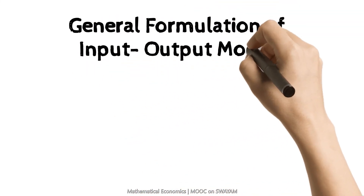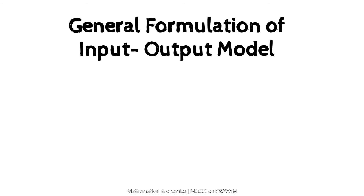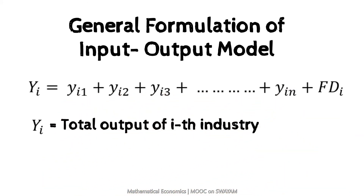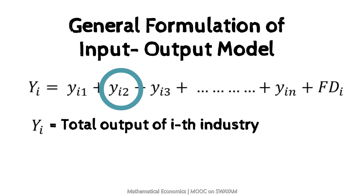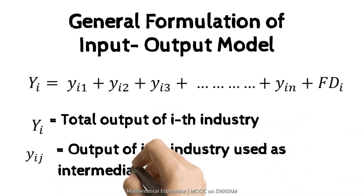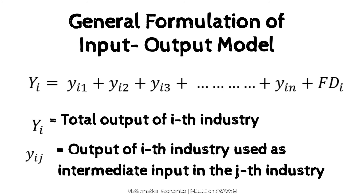Let us now formulate the general form of the input-output model, considering an open model. The total output of the i-th industry is expressed as the sum of outputs used as inputs across industries. In general, YIJ is the total quantity of output of the i-th industry used as input in the j-th industry.